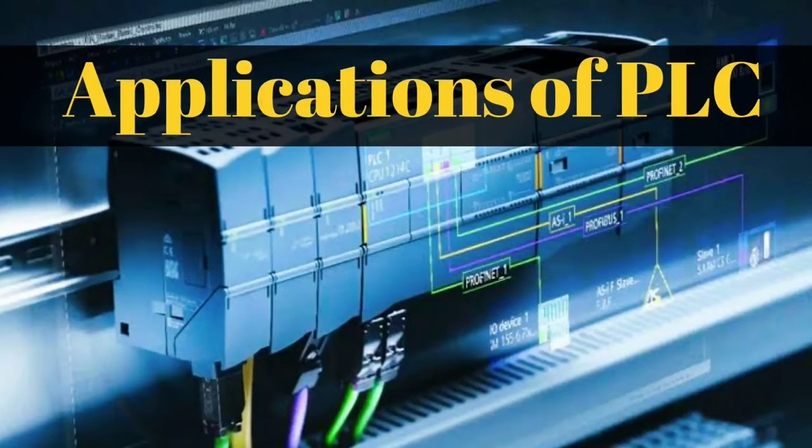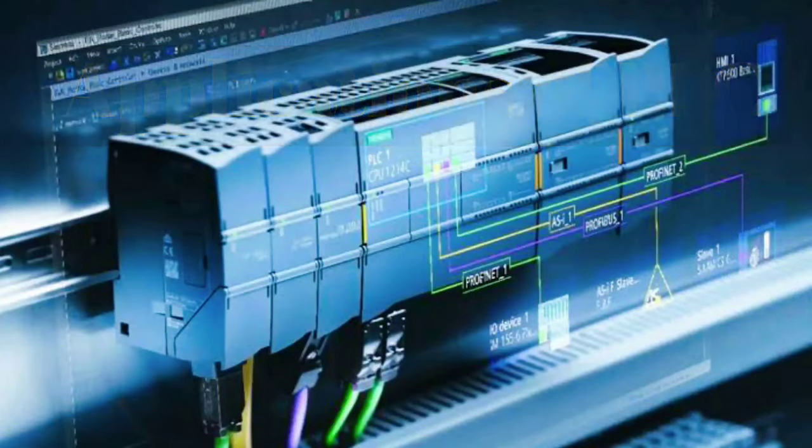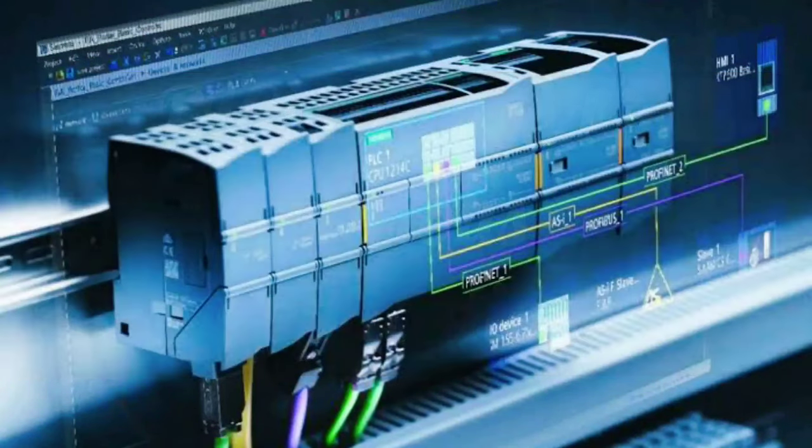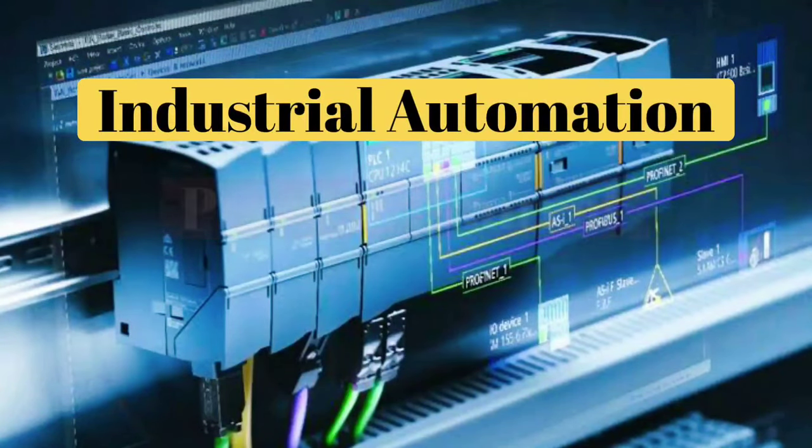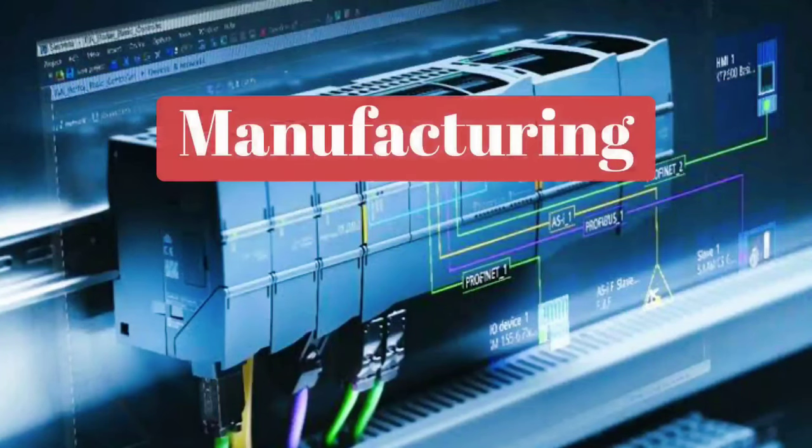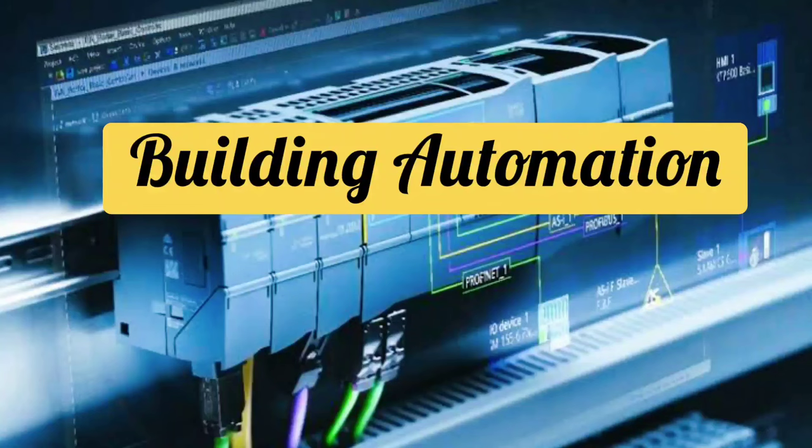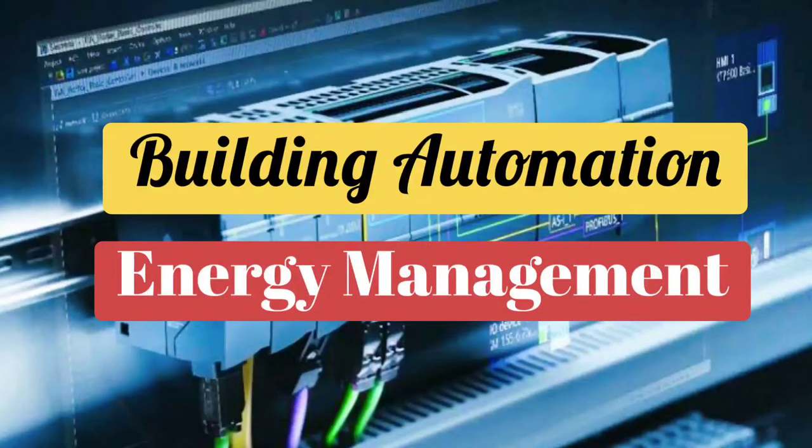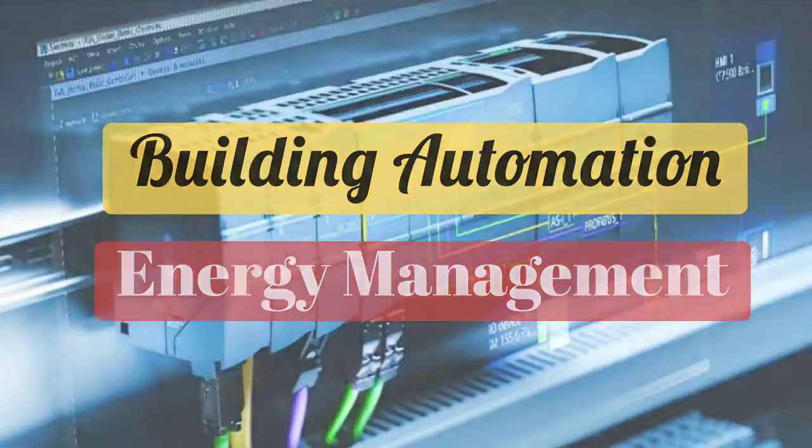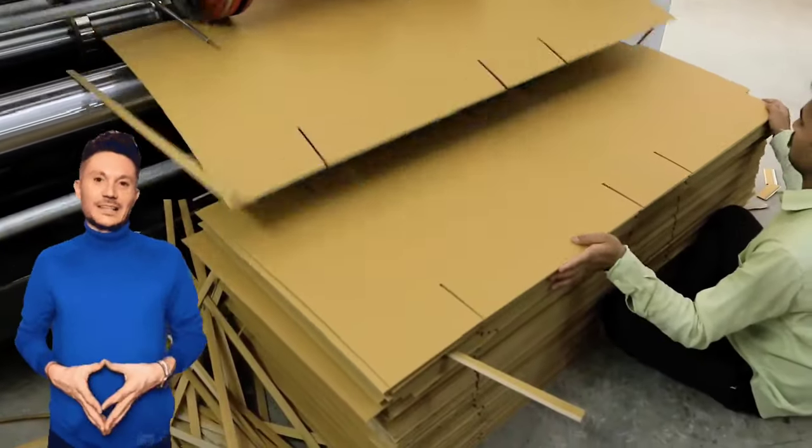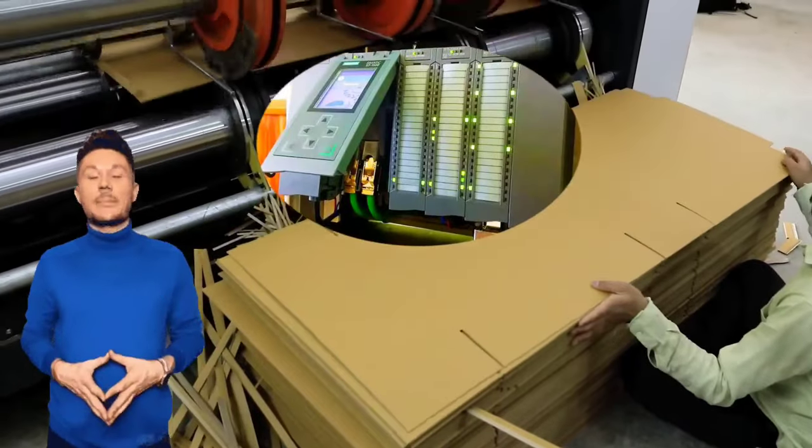Now, let us see the applications of PLC. PLCs are used in various applications such as industrial automation, process control, manufacturing, robotics, building automation, and PLC is widely used in energy management. You understand that in industrial automation and processes, the role of PLC is very important and crucial.